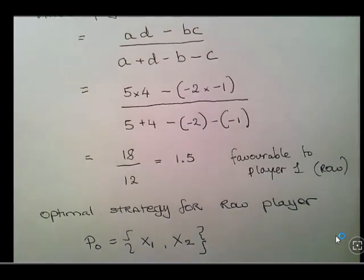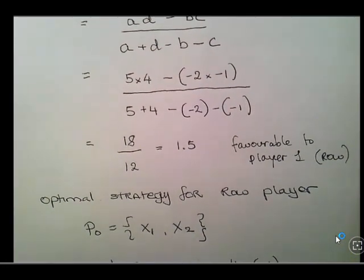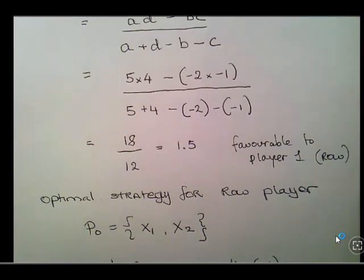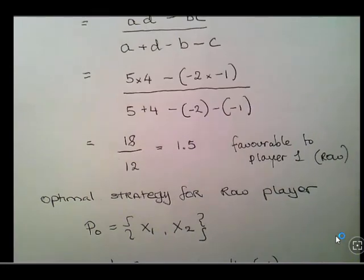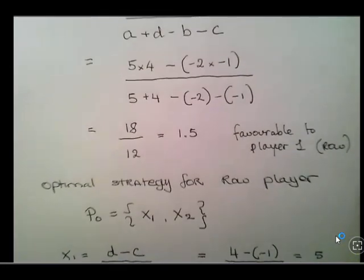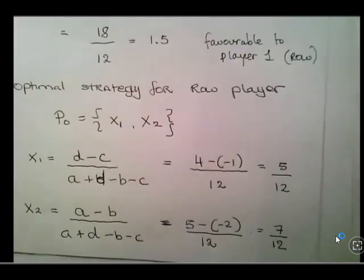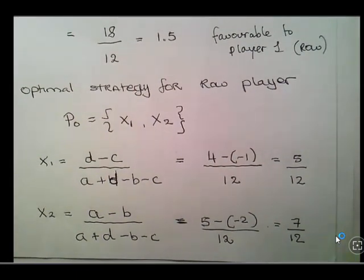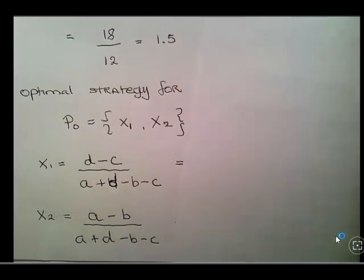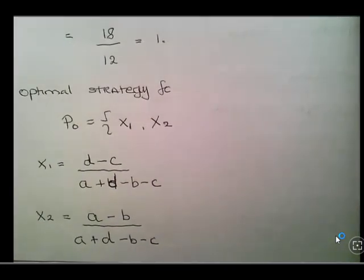We're going to calculate two identities. The Row Player's optimal strategy P-optimal is a row vector of probabilities X1 and X2, which we need to calculate. Using the formulas: X1 is D minus C over A plus D minus B minus C, and X2 uses A plus D minus B minus C in the denominator as well — the same denominator as before, which automatically works out to 12.